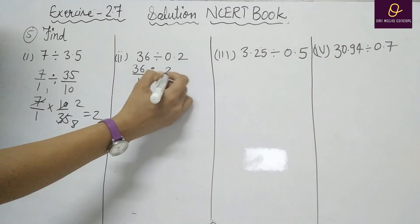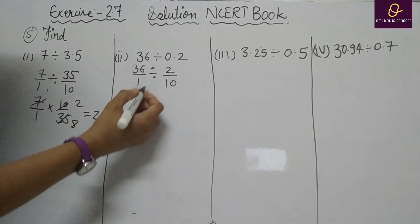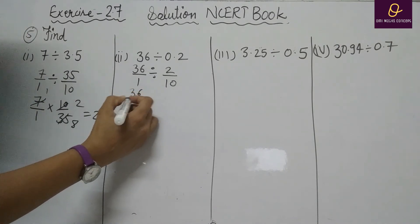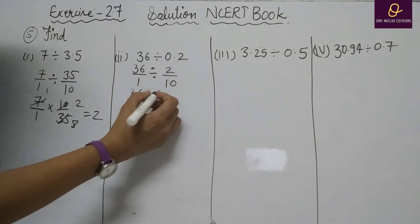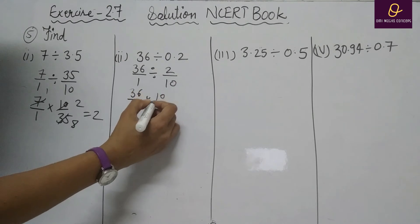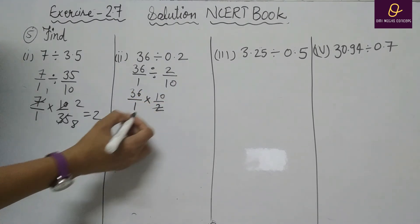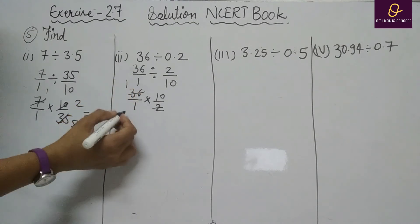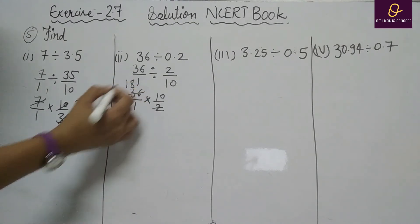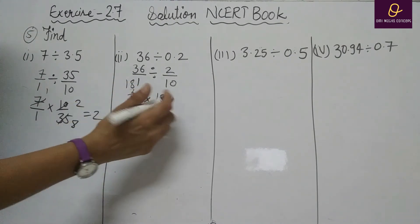Part B: 36 divided by 0.2. Remove decimal: 2 by 10. Divide changes to multiply and reciprocal of 2 by 10 is 10 by 2. Cancel 2 with 36 giving 18, then 18 multiplied by 10 equals 180.